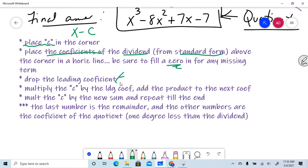Then we drop that leading coefficient. And we always multiply the C by that leading coefficient. Add the product to the next coefficient. Then multiply this. Then you bring it down. You have a new sum at the bottom of that. Then you run it again.